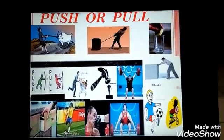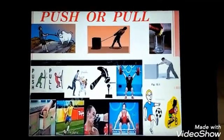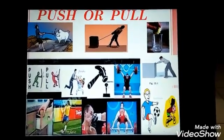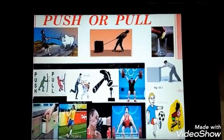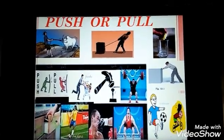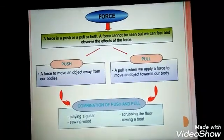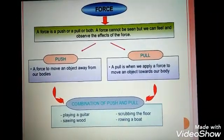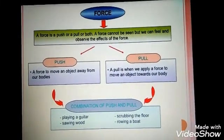Like driving a nail through a hammer inside the wall, that is a push. Kicking a ball is again a push. Then lifting up a ball is a pull. So force cannot be seen, but whatever effect it produces on the object, that we can easily observe. Now let us summarize. Force is a push or a pull or both which cannot be seen, but the effect that it produces can be seen on the objects.